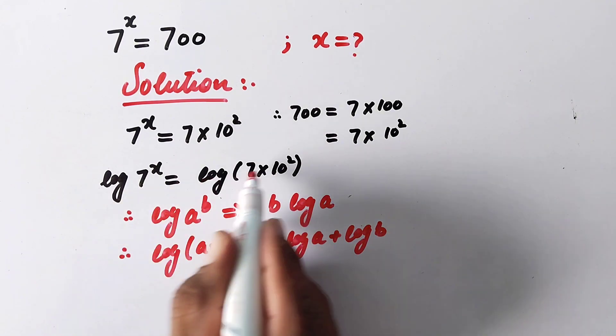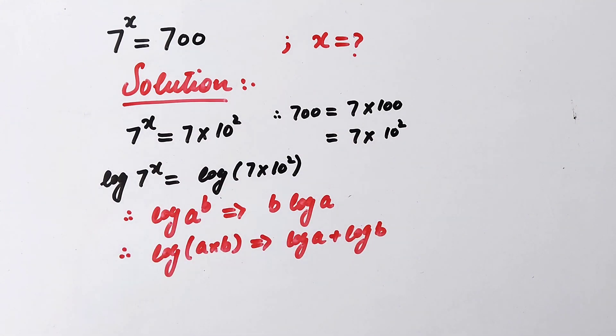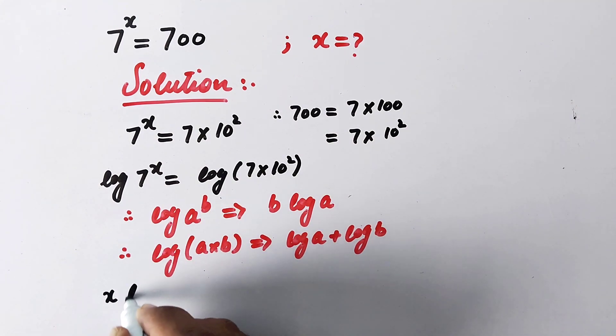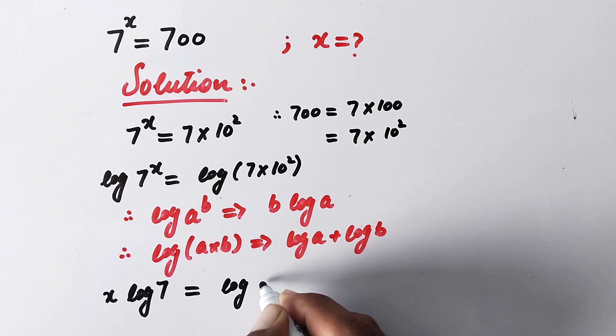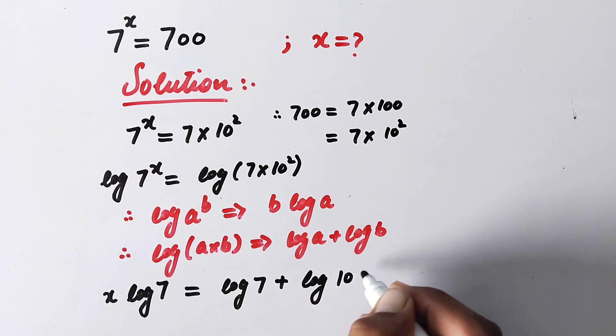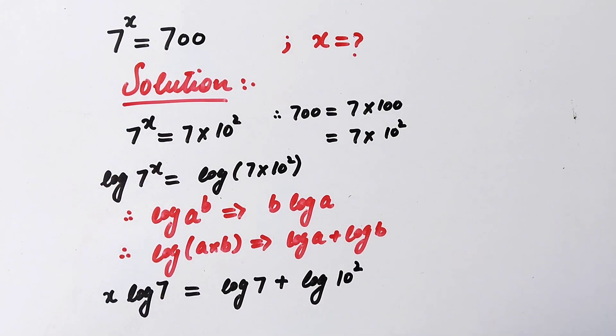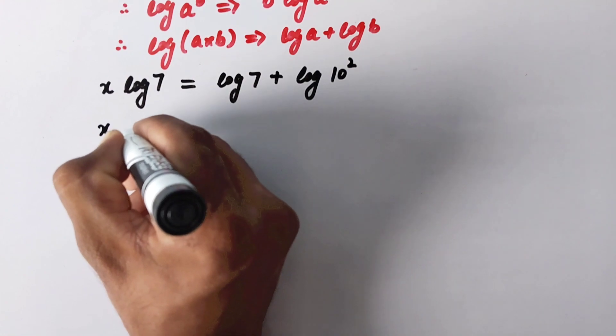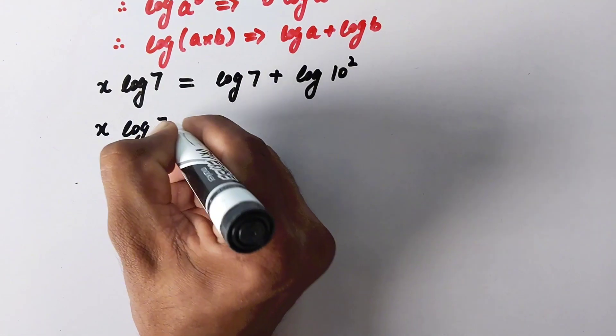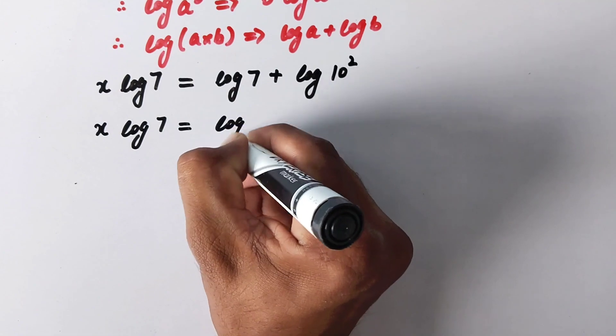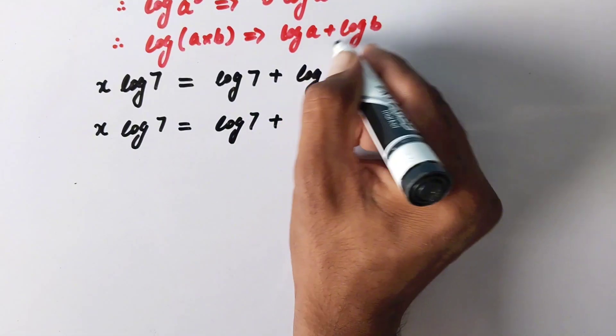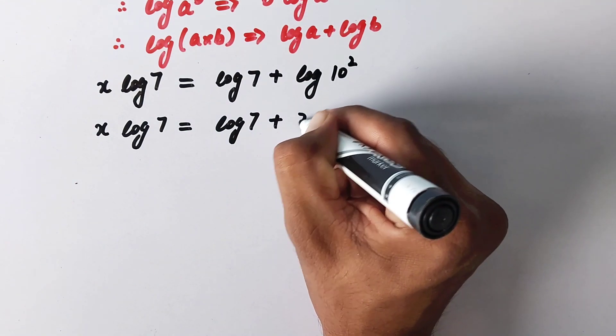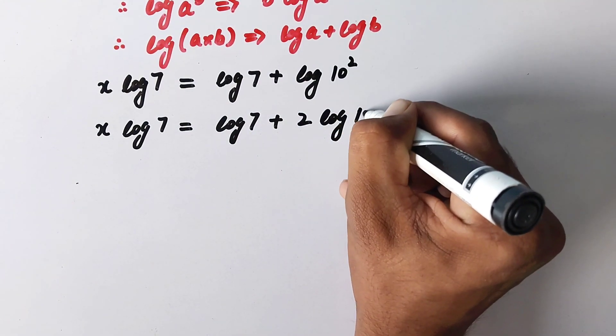So now by using these rules, we can write the above values as x log 7 is equal to log 7 plus log 10 to power square. Or now here x times log 7 is equal to log 7 plus, by using the same rule here it will be 2 times log 10.